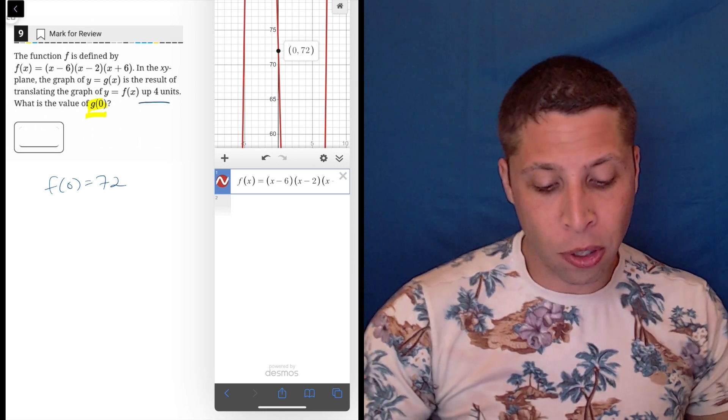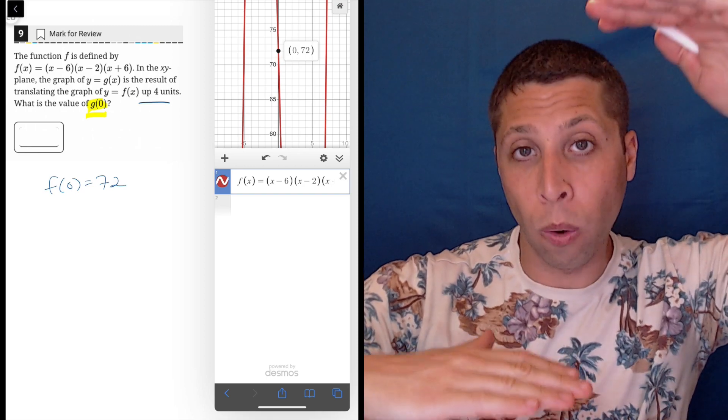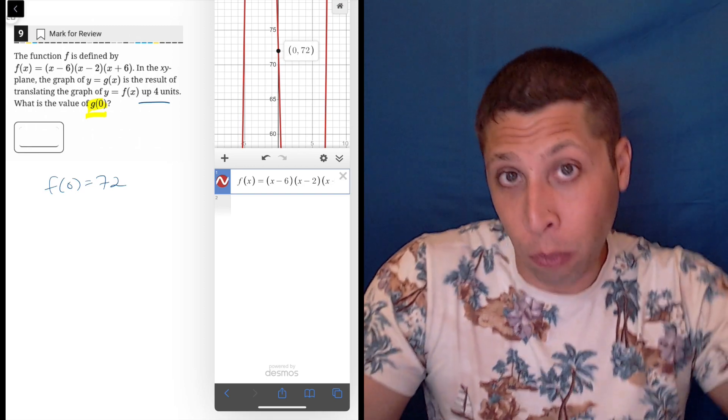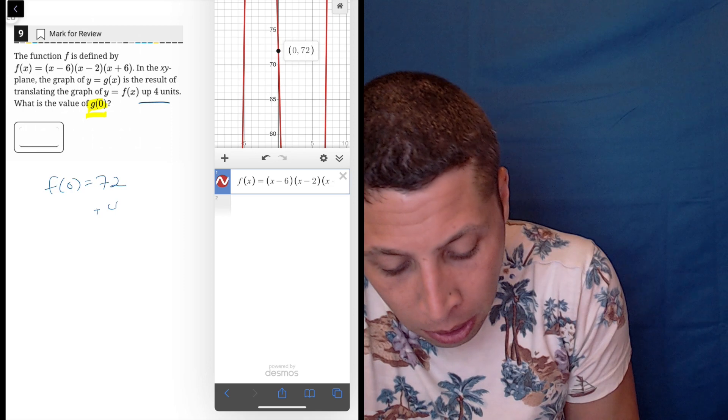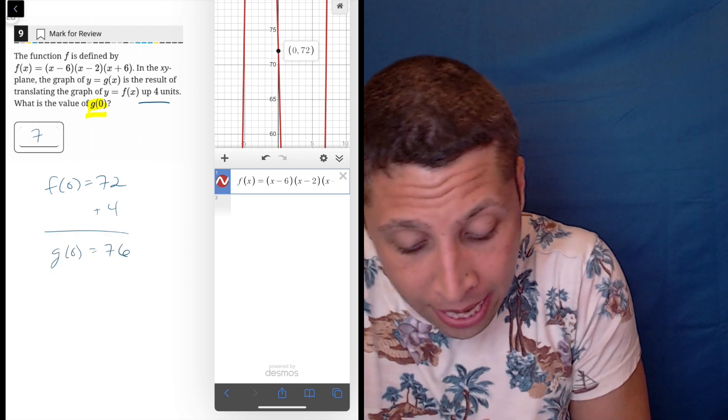And then if we're moving that four units up, just think what would happen, right? This entire red graph is going to shift up 4. So we'll add 4 to it. So 72 plus 4 is 76. And that is the answer.